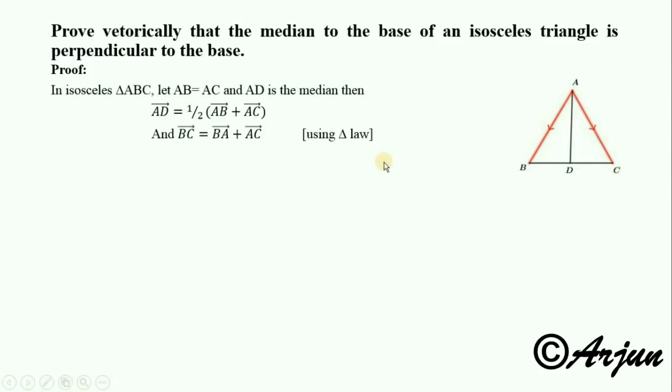Now, using vector addition in the triangle, BC equals BA plus AC.